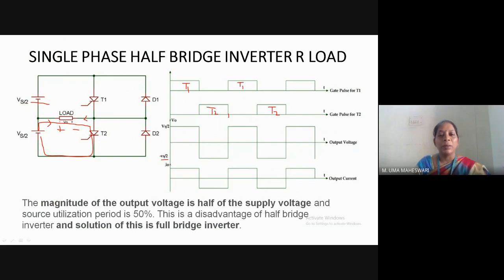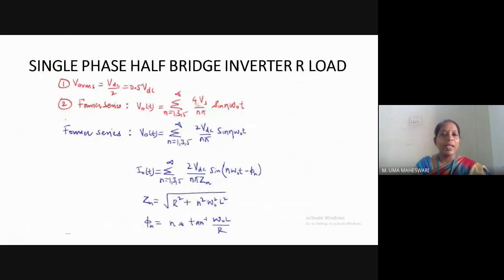The magnitude of the output voltage waveform is half of the supply voltage. Because the source utilization period is only 50%, this is a disadvantage of the half bridge inverter, and to resolve this we use a full bridge inverter. Using Fourier series, the output voltage expression is represented as: V0 = summation (N = 1, 3, 5 ... to infinity) of 2Vs / (Nπ) × sin(Nωt). This is for the single phase half bridge inverter.